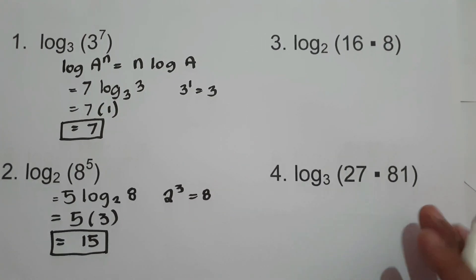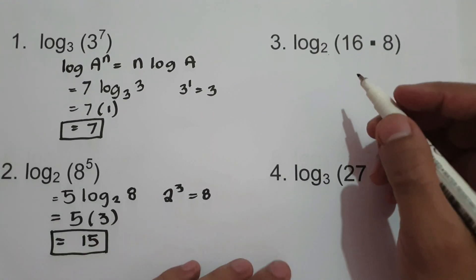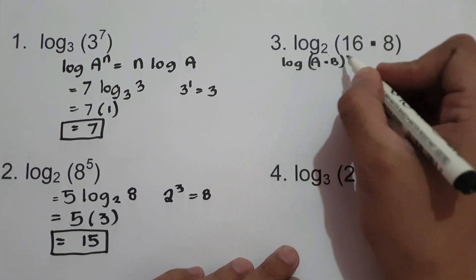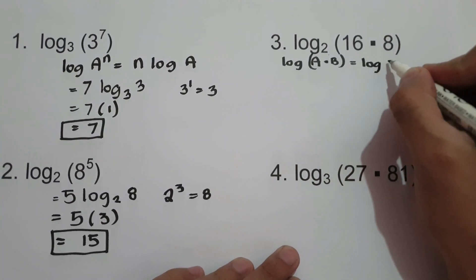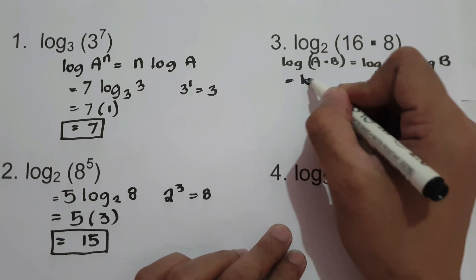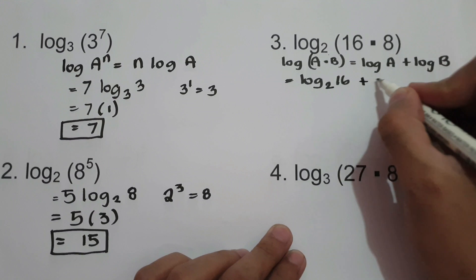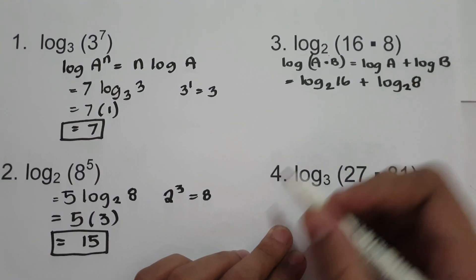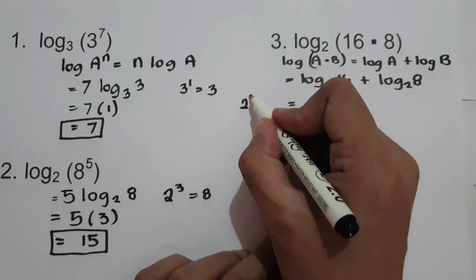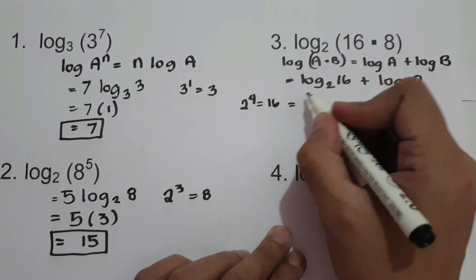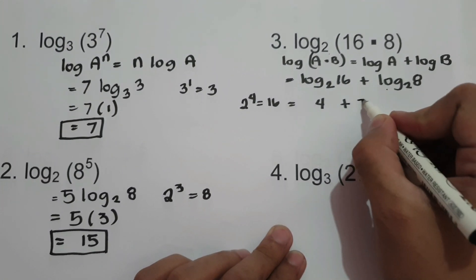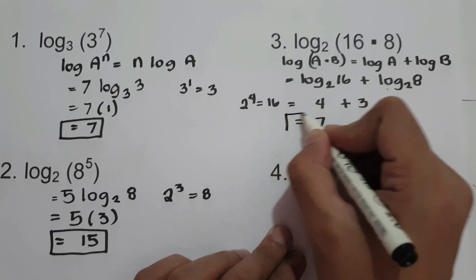For number 3, we have log of 16 times 8, base 2. We are going to use the product property: log(a times b) equals log a plus log b. So we have log 16 base 2 plus log 8 base 2. Now, 2 raised to 4 is 16, so log 16 base 2 is 4. And log 8 base 2 is 3. Therefore, 4 plus 3 is 7. That is our answer.